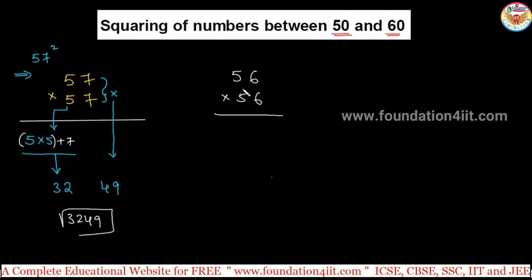Now next one, same: 56 into 56. How to calculate in mind? 5 into 5 is 25, just add with 6. 25 is common, then if you add 25 plus 6, 31. Next, 6 is the units place, that is 6 square or 6 into 6, that is 36, so 3136.